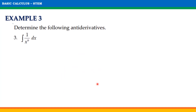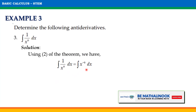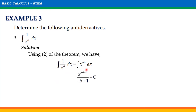Another example: solve for the indefinite integral of 1 over x raised to 6 with respect to x. Using theorem number 2, note first that 1 over x raised to 6 can be written as x raised to negative 6. Thus, the given will be equal to the indefinite integral of x raised to negative 6 with respect to x. We can now apply theorem number 2, giving us x raised to negative 6 plus 1 divided by negative 6 plus 1 plus c. Simplifying, we get x raised to negative 5 divided by negative 5 plus c. Moreover, to write the exponent as positive, we take its reciprocal. Thus, the final answer is negative 1 over 5x raised to 5 plus c.